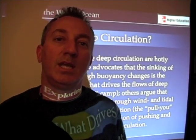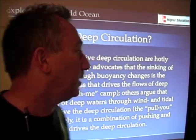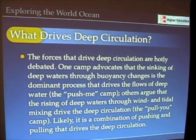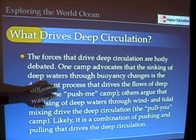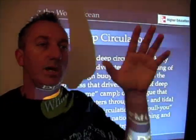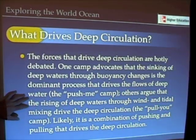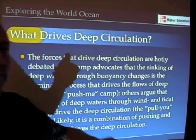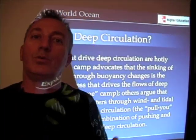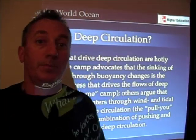Ocean circulation is up and down as well as around, so what drives the deep circulation is a really important question in modern-day physical oceanography, and one that's not without some controversy. There's one group of people that think it's simply the buoyancy changes that cause the circulation of the deep ocean — I call this the 'push me' camp. In other words, as water sinks it pushes water ahead of it, driving the motions of the deep ocean. There's another camp that says you really have to have that water pulled up, through things like wind-driven upwelling.